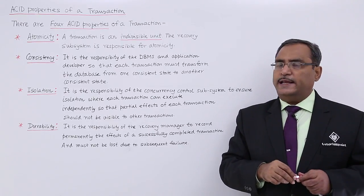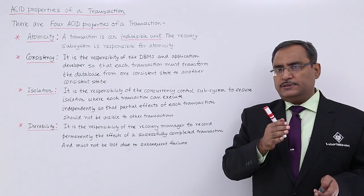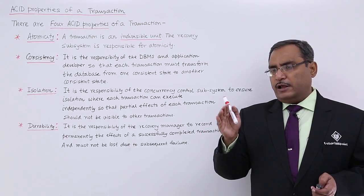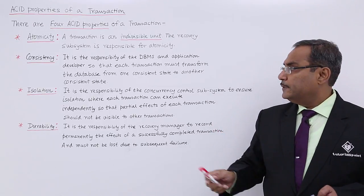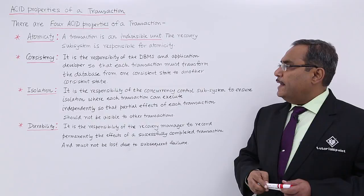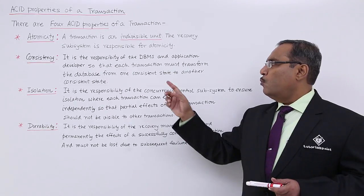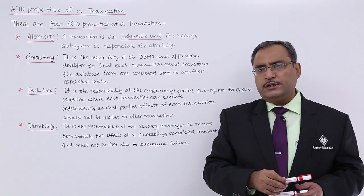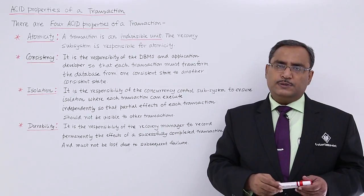The next property is consistency. Whenever a transaction will get executed, before that the database state should be consistent, and after execution of the transaction completely, the database should find itself in another consistent state. It is the responsibility of the DBMS and application developer that each transaction must transform the database from one consistent state to another consistent state. Prior and after execution of the transaction, both states must be consistent.